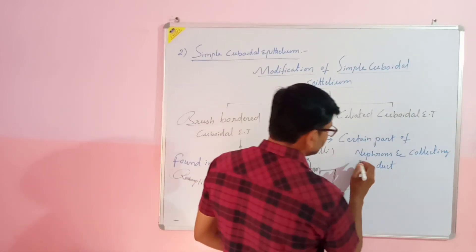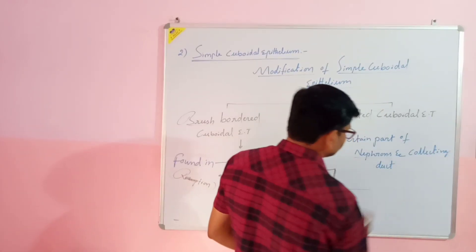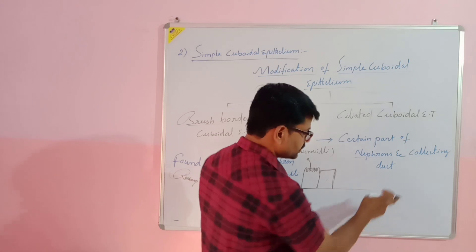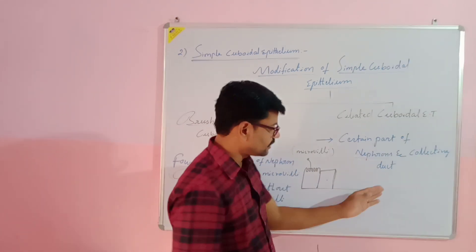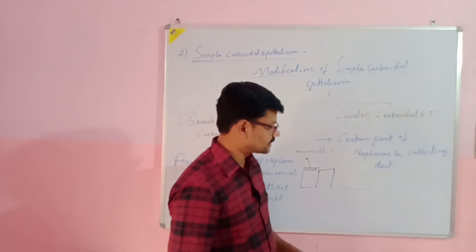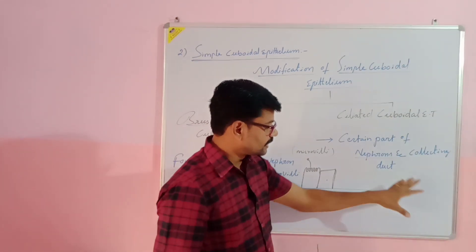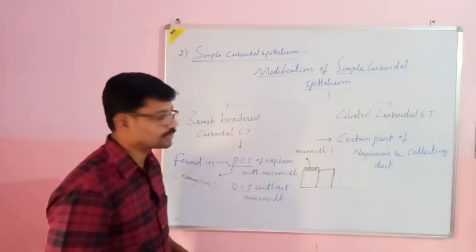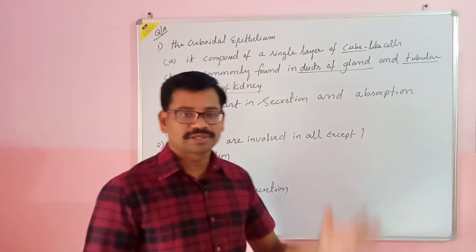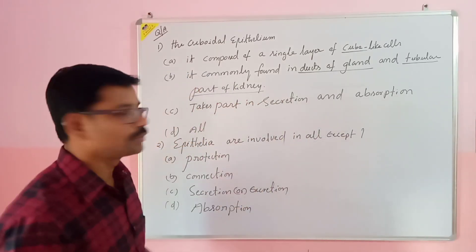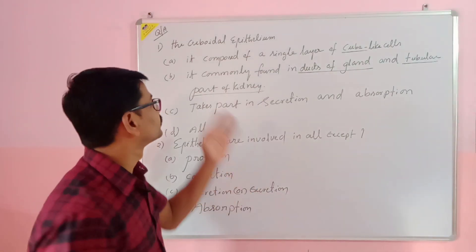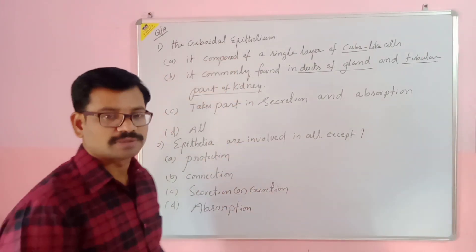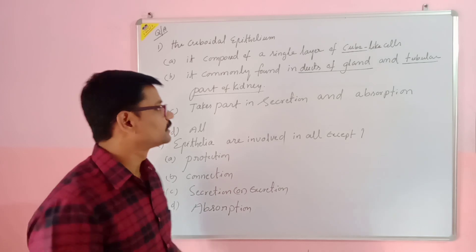Ciliated cuboidal epithelium is present in certain parts of the nephron, and the collecting ducts also have this type. The lining of the collecting ducts is made up of ciliated cuboidal epithelial tissue. In the next lecture, we will talk about the characteristics of cuboidal epithelial tissue, and there are some questions for you.